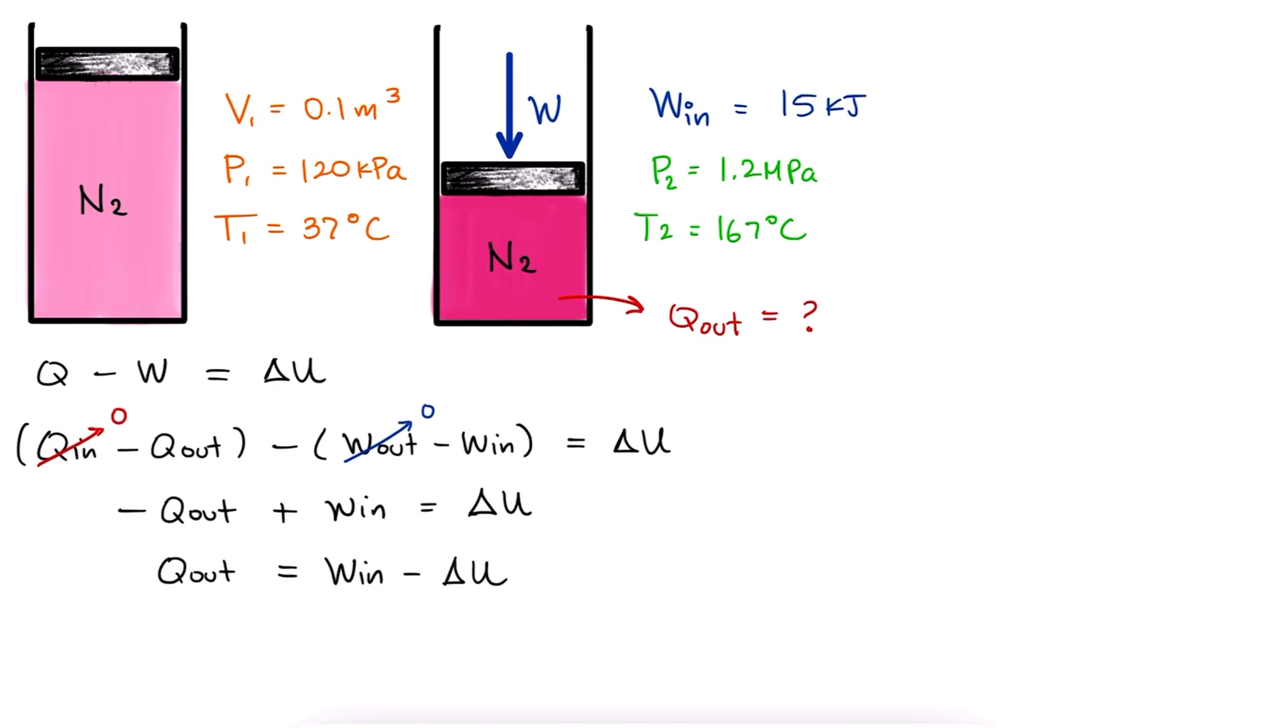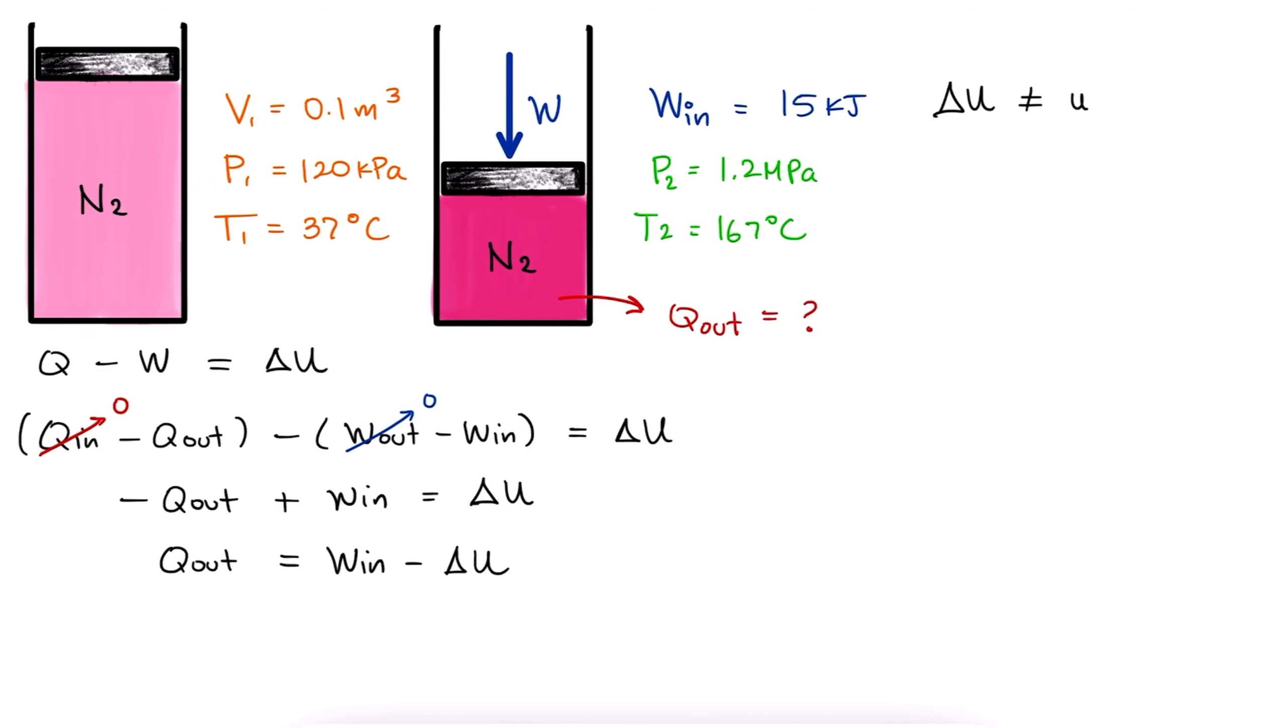This total change in internal energy is not the change in specific internal energy so we are going to need either the mass or the number of moles depending on if we have U or U-bar respectively. Can we find the mass from the given information? Yes.